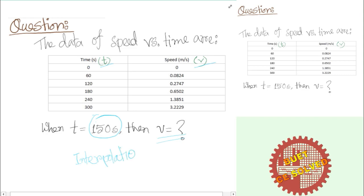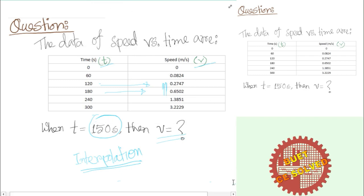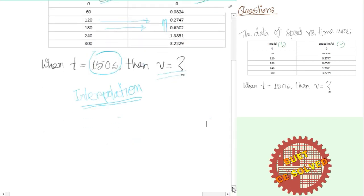We should take a master level approach to interpolation. Interpolation — the data is given, and we need to find a value at a point not directly in the data. The point 150 is between 120 and 180 in the data. So we need to find the speed value within that range using the interpolation method.